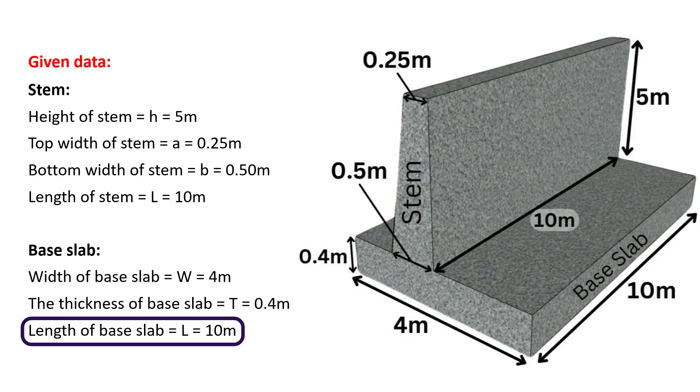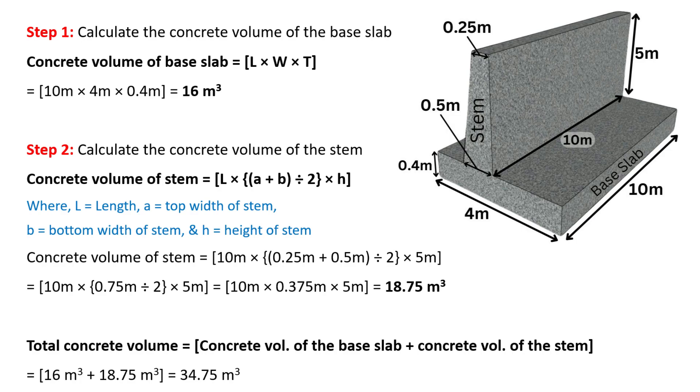Now, let's move on to the calculation process step by step. The first step is to calculate the concrete volume of the base slab. The concrete volume of the base slab is calculated by multiplying its length, width and thickness. Length of the base slab is given as 10 meters. Its width is 4 meters and the thickness of base slab is 0.4 meters. On substituting all these values, the concrete volume of the base slab will be equal to 16 cubic meters.